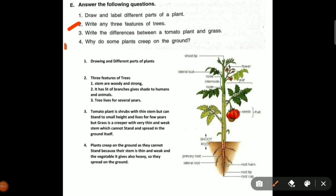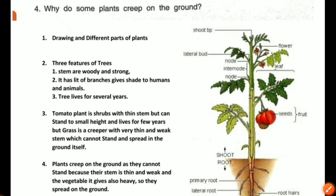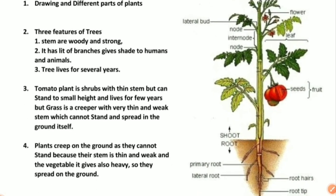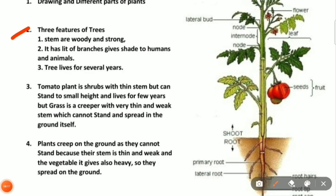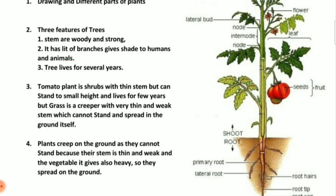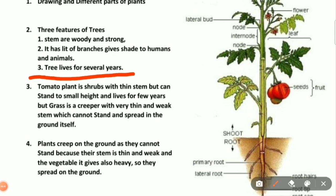Second question: write any three features of trees. Trees' stems are woody and strong — this is called the trunk. Trees have a lot of branches and give shade to humans and animals. The tree lives for several years — more than 100 years. These are the important features of trees.